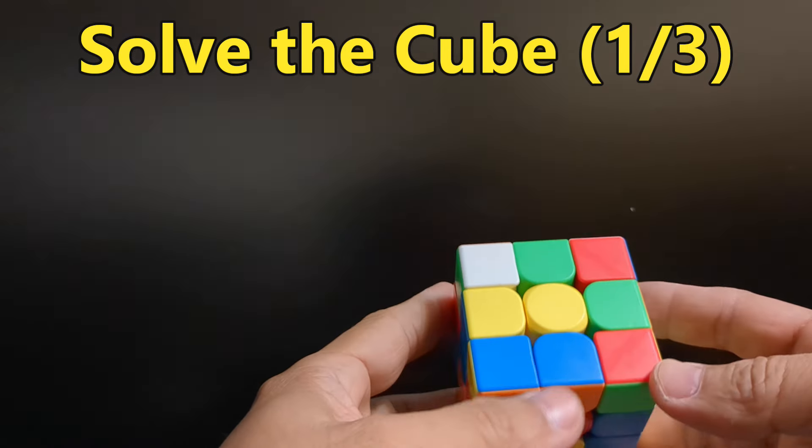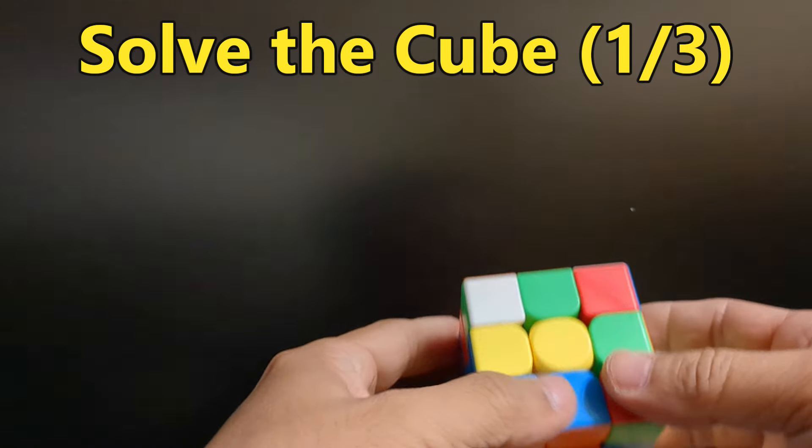All right, today we're going to go over the eight steps to solving a Rubik's Cube. First of all, make a white daisy.